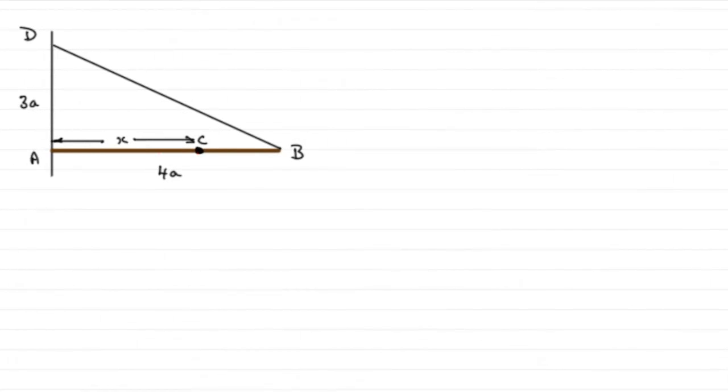Before we start, I've copied down the diagram that we're given. We need to add some forces to this because we've got this uniform rod AB of length 4a with mass 3m.